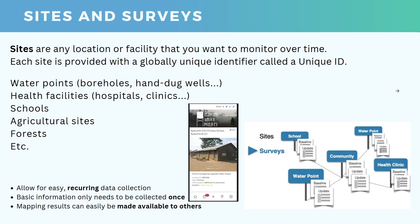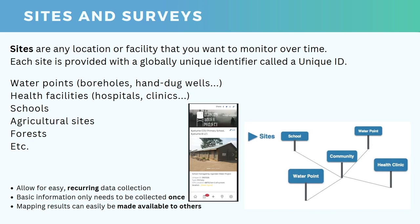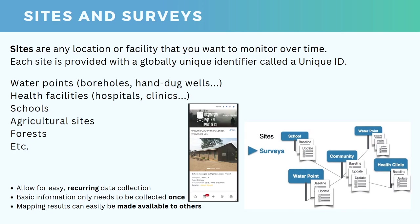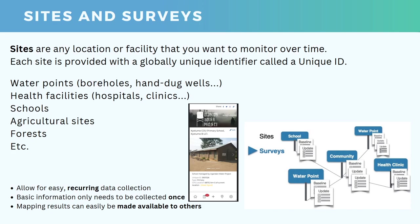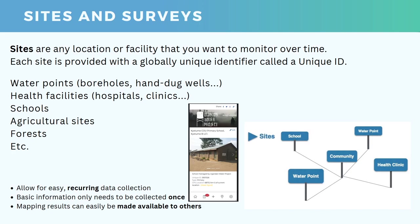Sites are a key concept in MWater and Solstice, and they mean any location or facility that you want to monitor over time. Each of these sites is provided with a globally unique identifier called a unique ID, so it's always going to be unique, separate, and identifiable. These mean things like water points, boreholes, hand-dug wells, and so on.